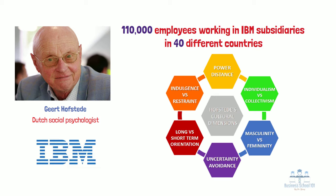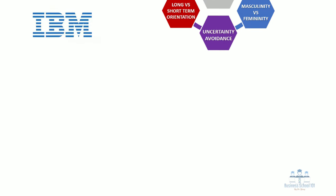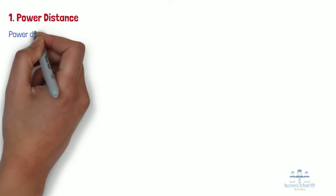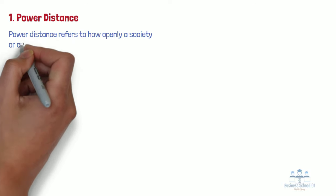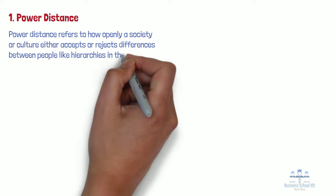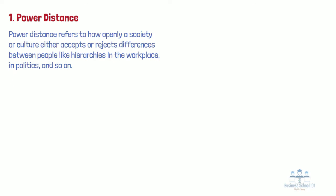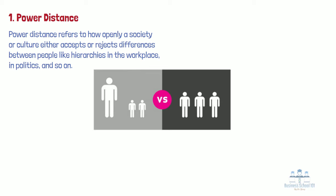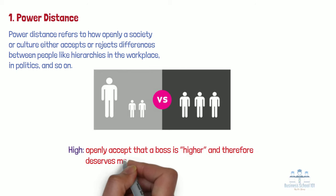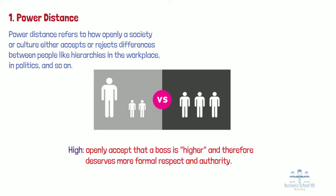The Hofstede cultural framework consists of the following six dimensions. Number 1: Power Distance Index. Power distance refers to how openly a society or culture either accepts or rejects differences between people, like hierarchies in the workplace, in politics, and so on. High power distance cultures openly accept that a boss is higher, and therefore deserves more formal respect and authority.